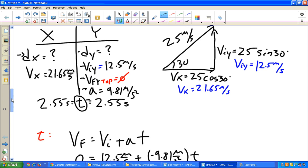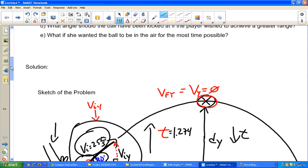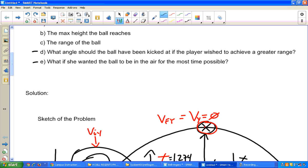Now, if you'll recall, the very last questions I asked were, what angle should the ball have been kicked at if the player wished to achieve a greater range? Recall from class what we defined as the angle for greatest range. If we neglect air resistance and if the ball starts at the same height, we learned that 45 degrees is that magic angle. So if the soccer player would have kicked it at about a 15 degree higher angle, it would have gone further without her having to kick it any harder at all.